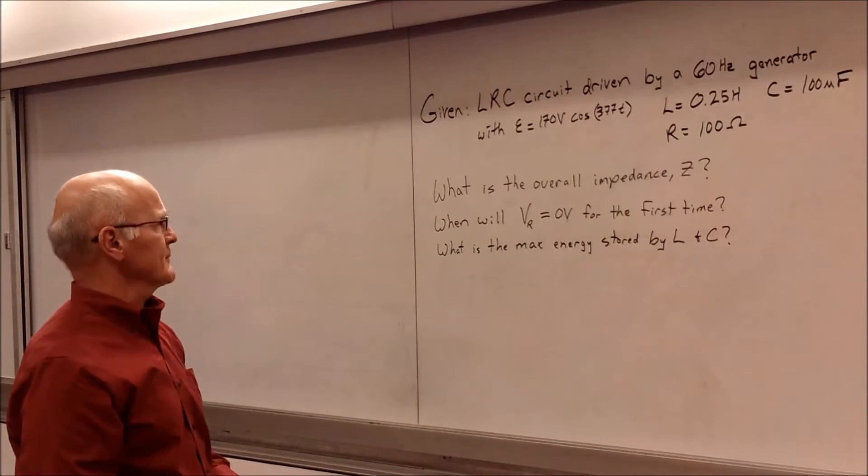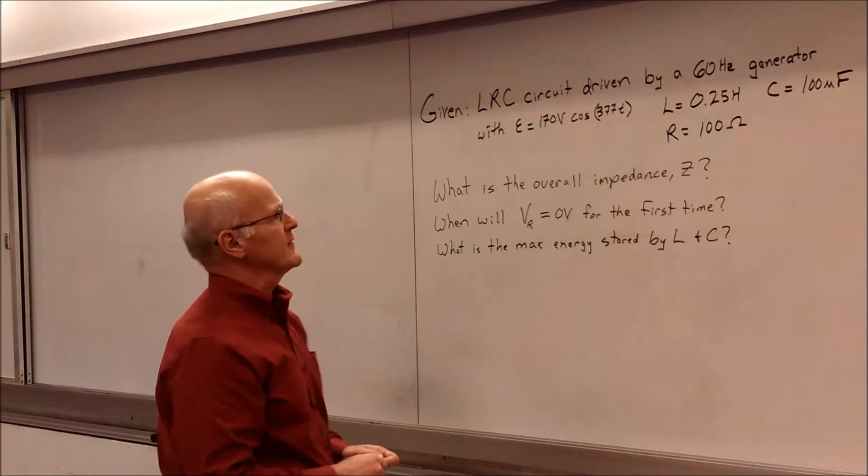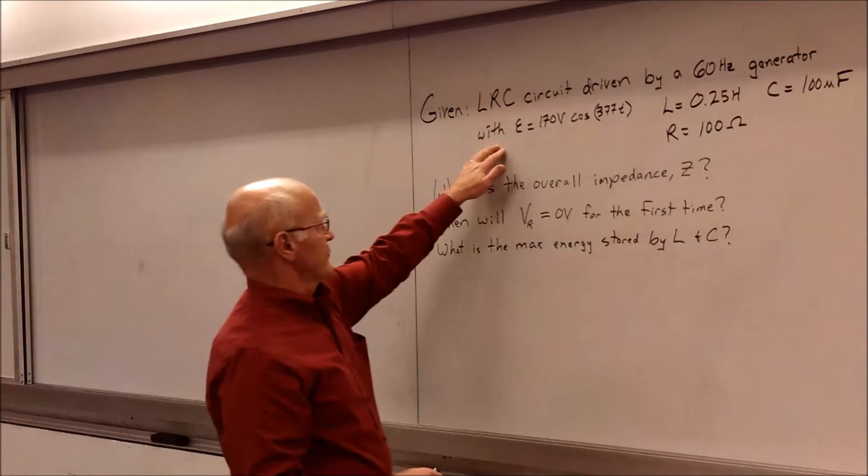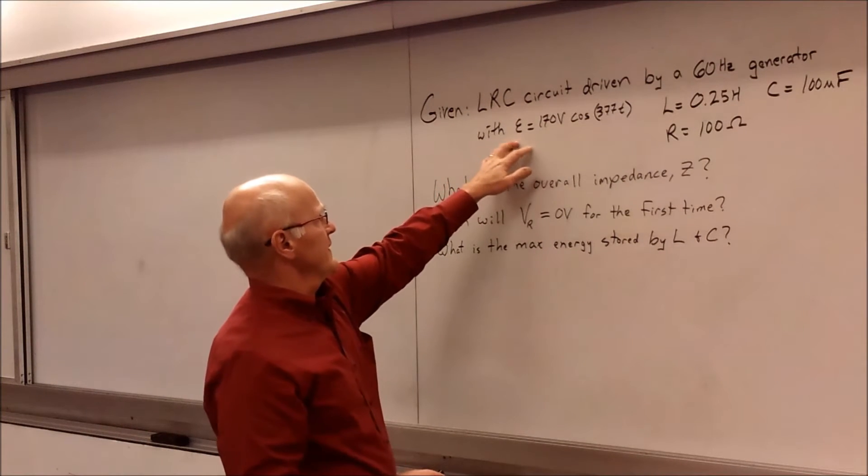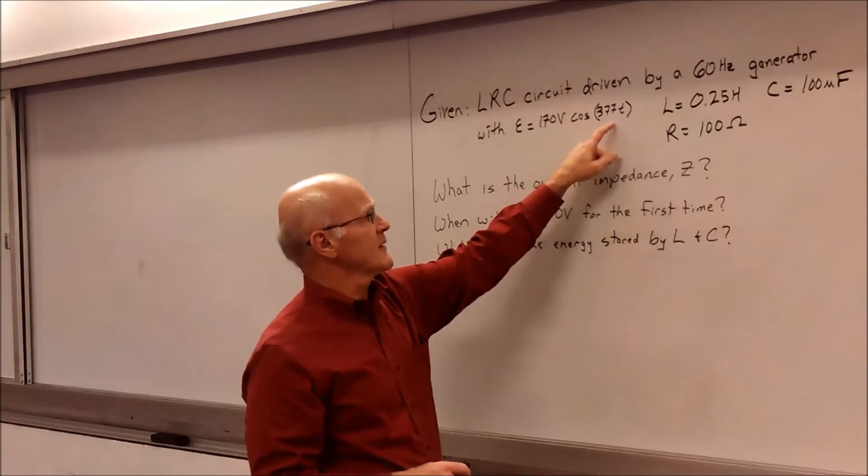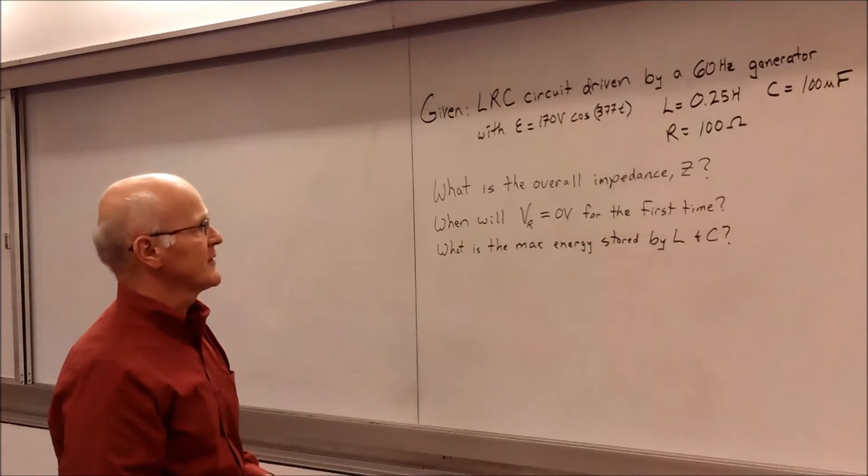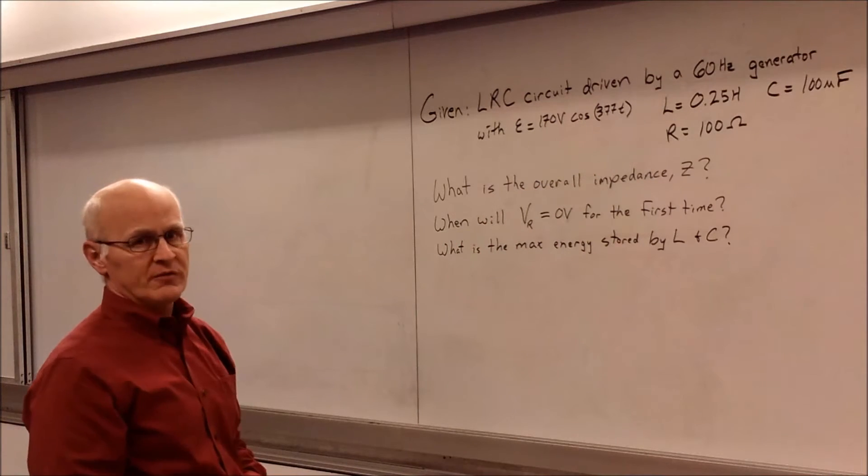Today's problem is an RLC circuit. It's driven by a 60 hertz generator that you find in everyday life. And that generator is driven by this equation. The EMF by the generator is 170 volts times cosine 377 times the time, and 377 radians per second corresponds to 60 hertz, given by omega equals 2 pi f.